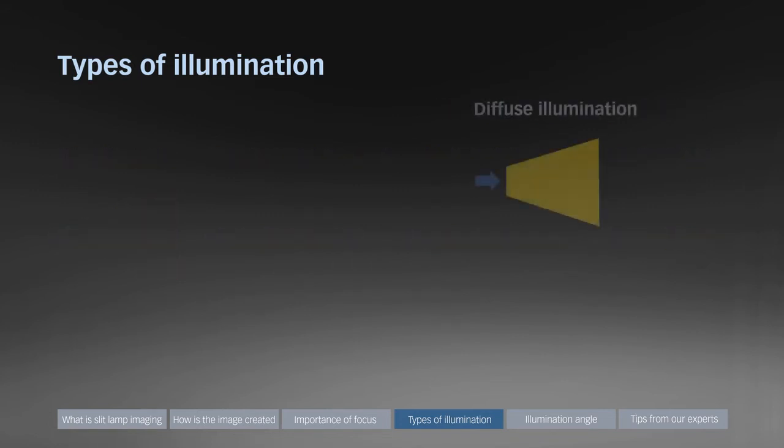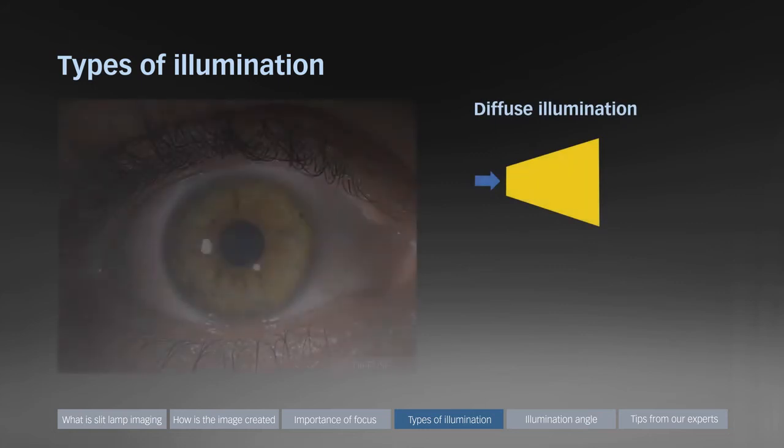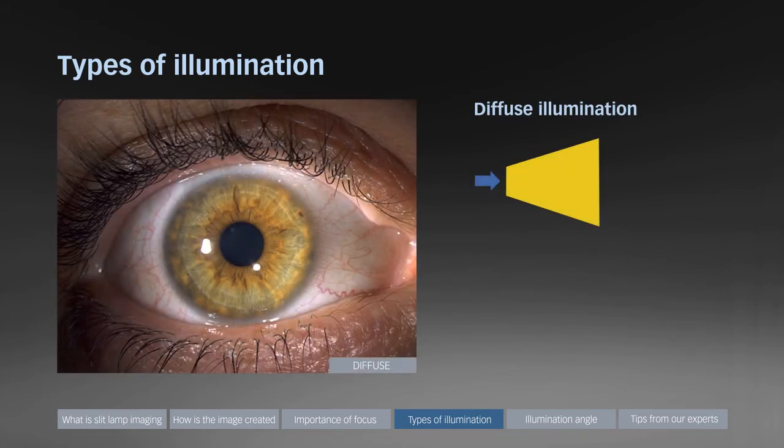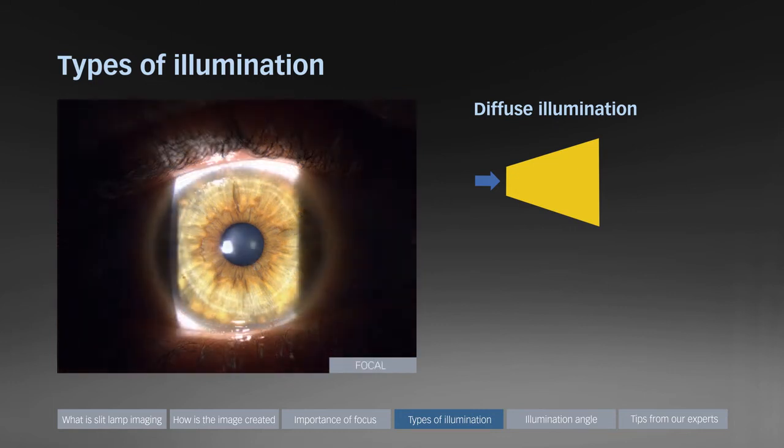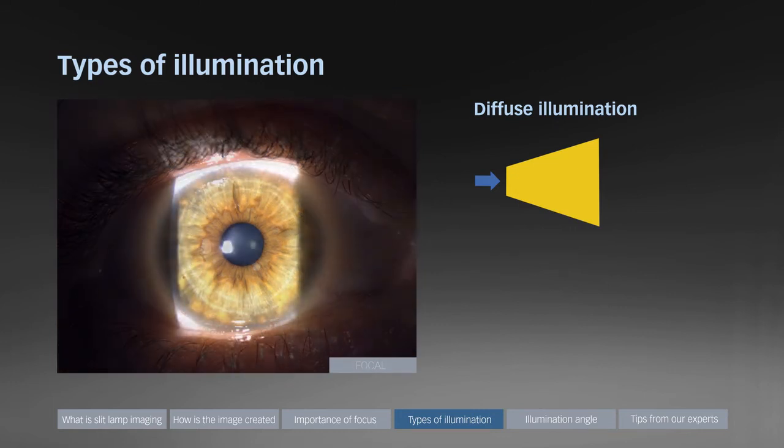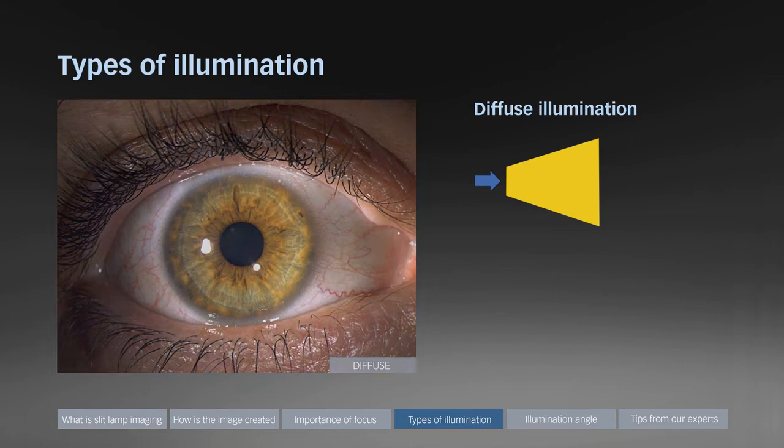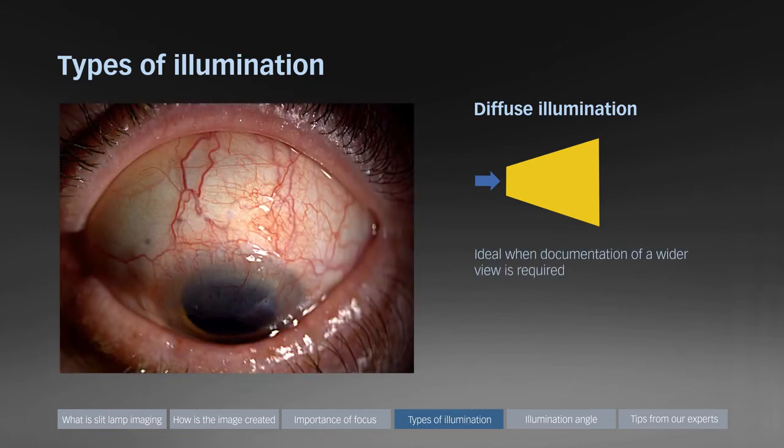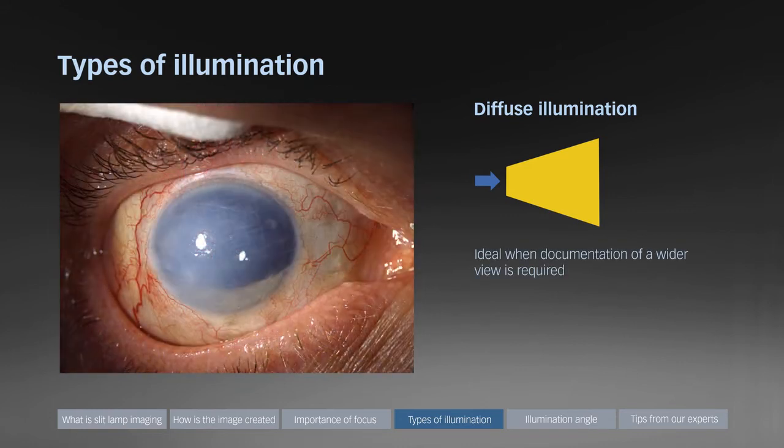Diffuse illumination provides even light distribution. For comparison, the same eye with direct focal illumination and here the diffuse illuminated version again. Diffuse illumination is ideal when documentation of a wider view is required.